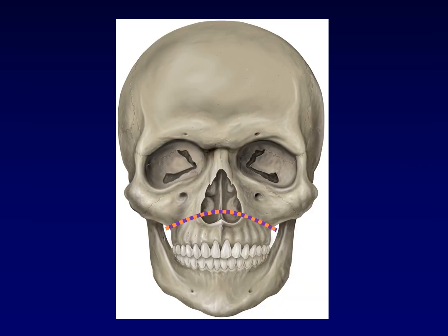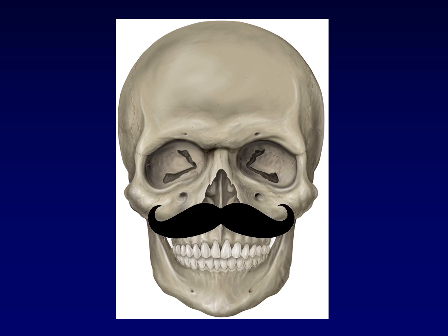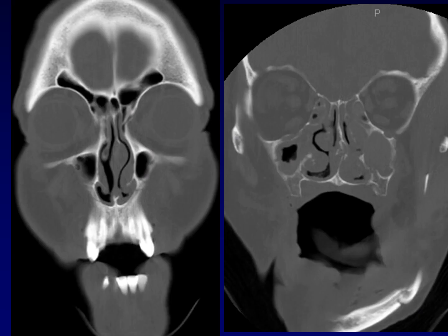Laforte 1 fractures run across the upper alveolus and separate the hard palate and alveolus from the rest of the midface. If it helps you remember it, this can be likened to a mustache. On imaging, what we see in coronal images is a fracture line that extends across the anterior walls of the maxillary sinuses and across the septum. You can see both the posterior and medial walls of the maxillary sinus involved as well as the septum, and this symmetric fracture continues out the other side.